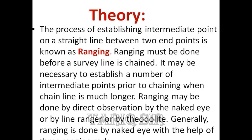As explained in the last video, we select two points A and B — A is next to you and B is the far end. Between them we have many intermediate points selected for ranging, which are established with the help of a ranging rod. The ranging process we had conducted previously was with the naked eye, without using any apparatus or instrument, and a minimum of three ranging rods were required.